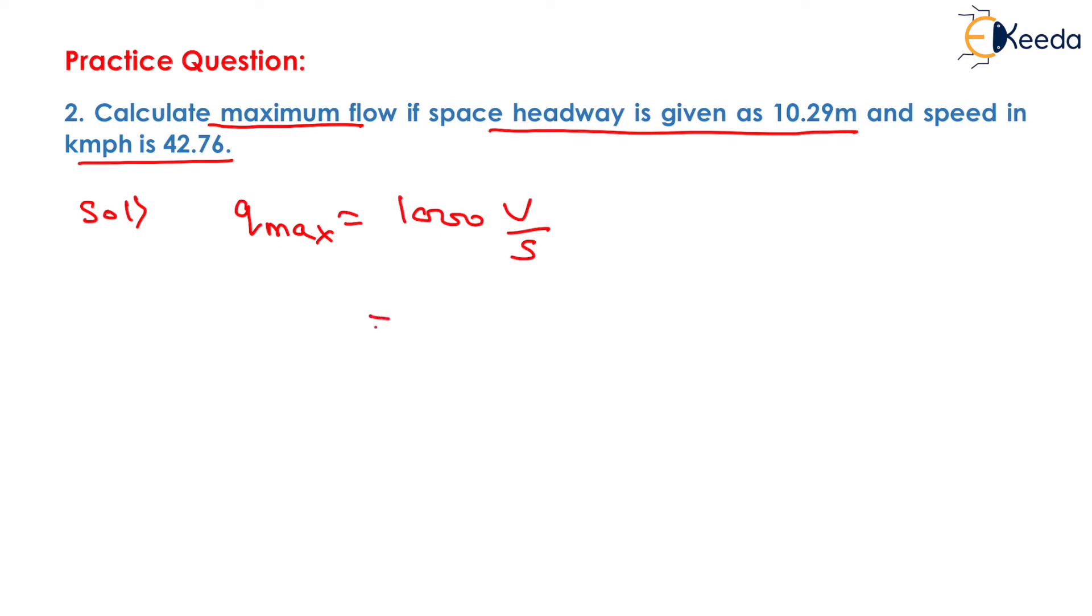Now we have the value of speed of vehicle equals to 42.76 and we have the value of space headway equals to 10.29 meter. On solving this, that is 42.76 divided by 10.29 into 1000, it will be equals to 4155.49 vehicles per hour.